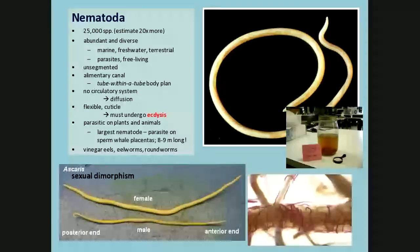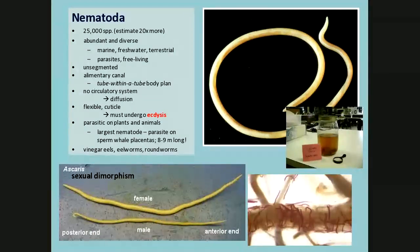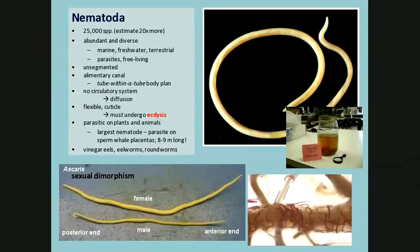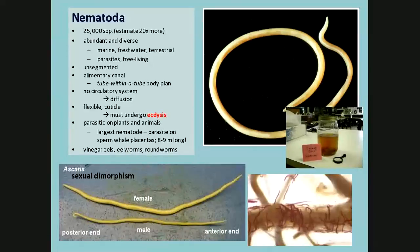Vinegar eels are worms that can live in vinegar — interesting that they can tolerate that kind of pH. Nematodes are a very abundant and diverse group. Important in the soil as well; there are a lot of soil nematodes, important agriculturally. There are also parasitic ones. Nematodes are unsegmented, basically a tube-within-a-tube body plan — they have a mouth, an anus, and an alimentary canal. No circulatory system; they use diffusion, so they stay small. They have a flexible cuticle that they shed when they molt.